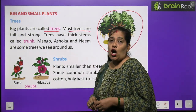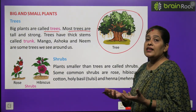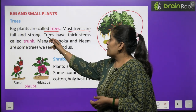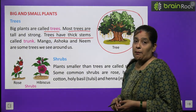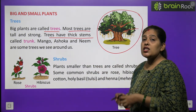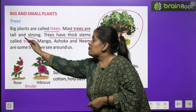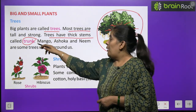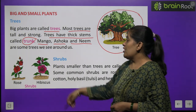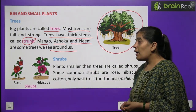Most trees are tall and strong. बहुत से पेड़ बड़े और मजबूत होते हैं। Trees have many thick stems called trunk. Trees की बहुत सारी मजबूत शाखाएं होती हैं जिसे हम trunk कहते हैं। Mango, Ashoka and Neem are some trees we see around us — आम का पेड़, Neem का पेड़ और Ashoka का tree हम mostly अपने आसपास देखते हैं।